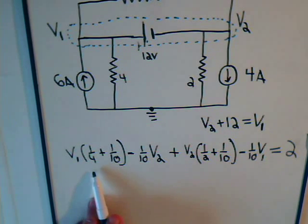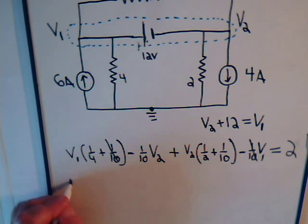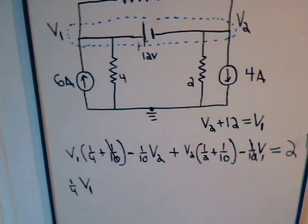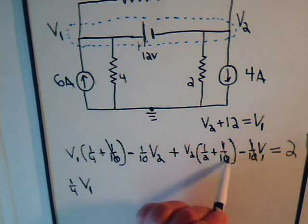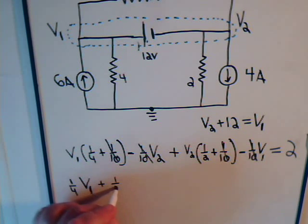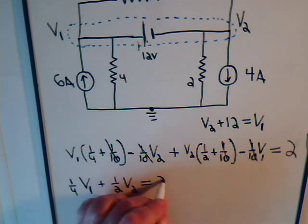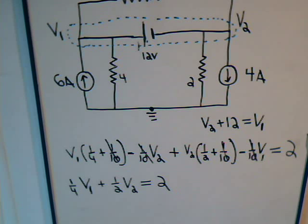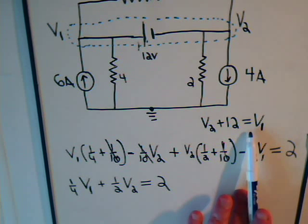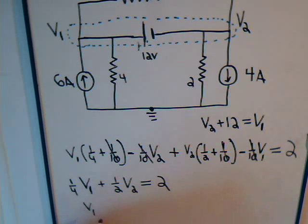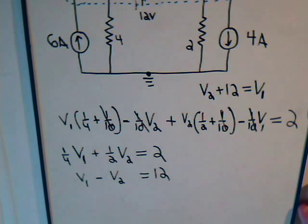Now simplifying: we have 1/4 V1 and 1/10 V1 on one side, and minus 1/10 V1 on the other — those cancel. This leaves 1/4 times V1. Similarly, minus 1/10 V2 and plus 1/10 V2 cancel, leaving plus 1/2 times V2 equals 2. So from our supernode equation we get: 1/4 V1 plus 1/2 V2 equals 2. We also have the relation V1 minus V2 equals 12. So we have two unknowns and two equations to solve.